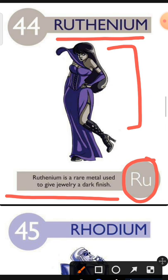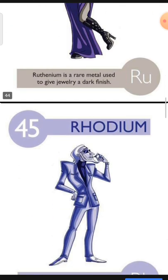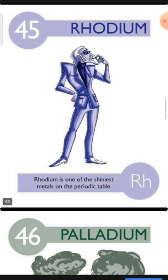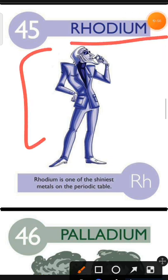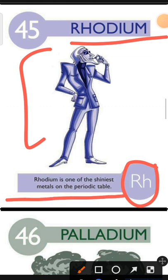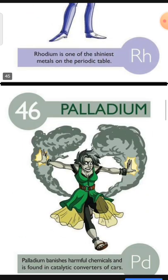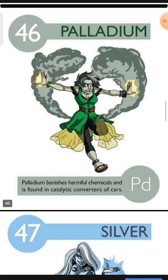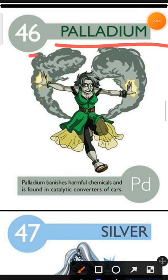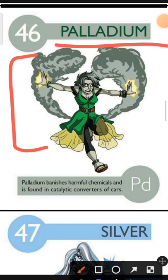Element number 45 is Rhodium. The characteristic of Rhodium is: Rhodium is one of the shiniest metals on the periodic table. Element number 46 is Palladium. The characteristic of Palladium is: Palladium banishes harmful chemicals and is found in catalytic converters of cars.